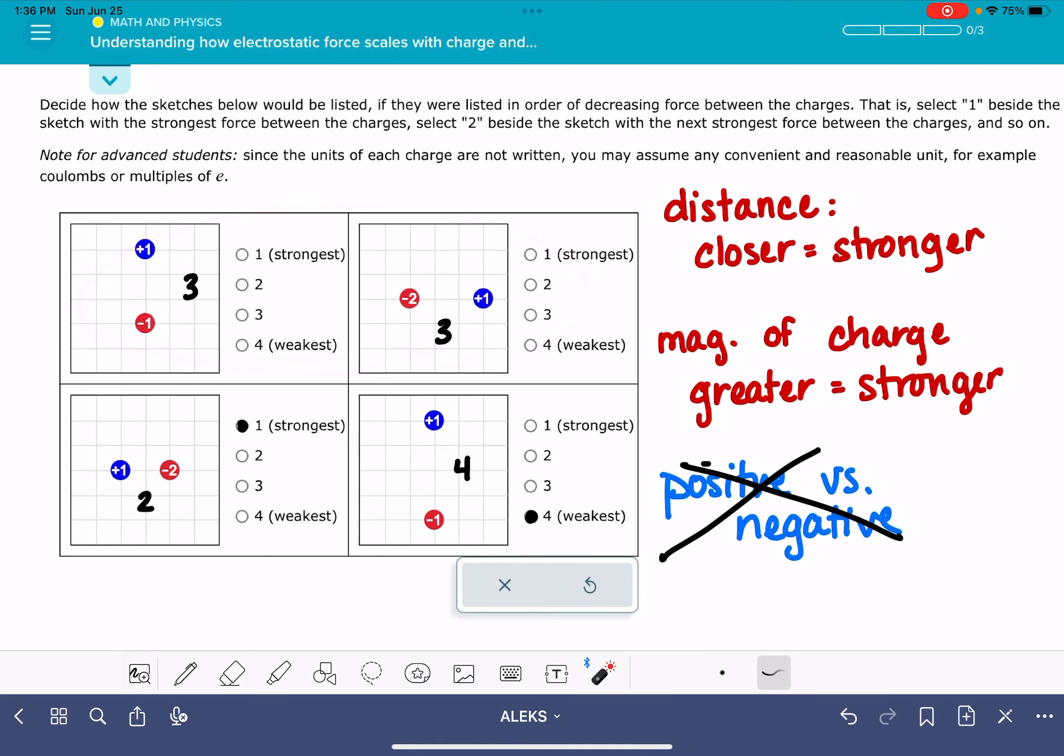These two are in the middle, somewhere in the middle of the strongest and the weakest. So these ones are going to be ranked, one of them is going to be the second strongest and one of them is going to be the third strongest.